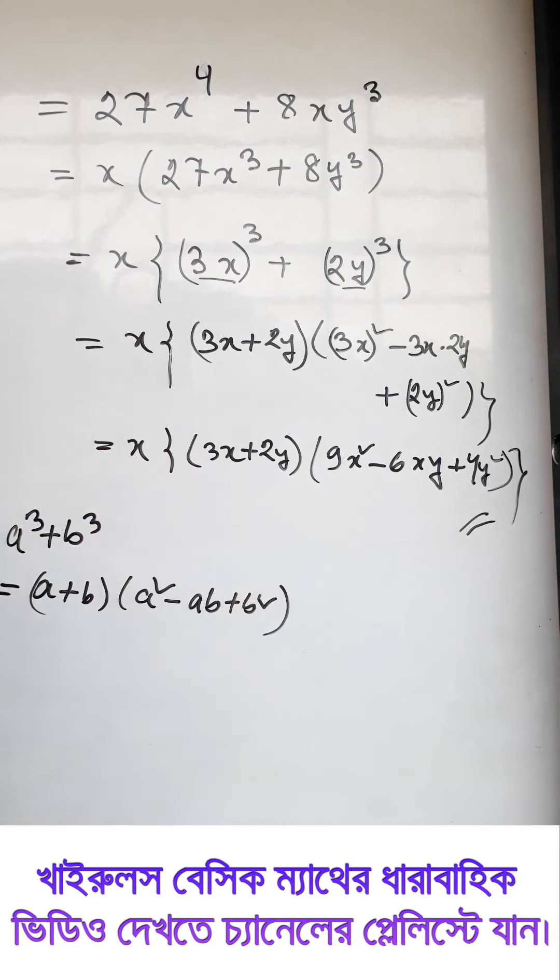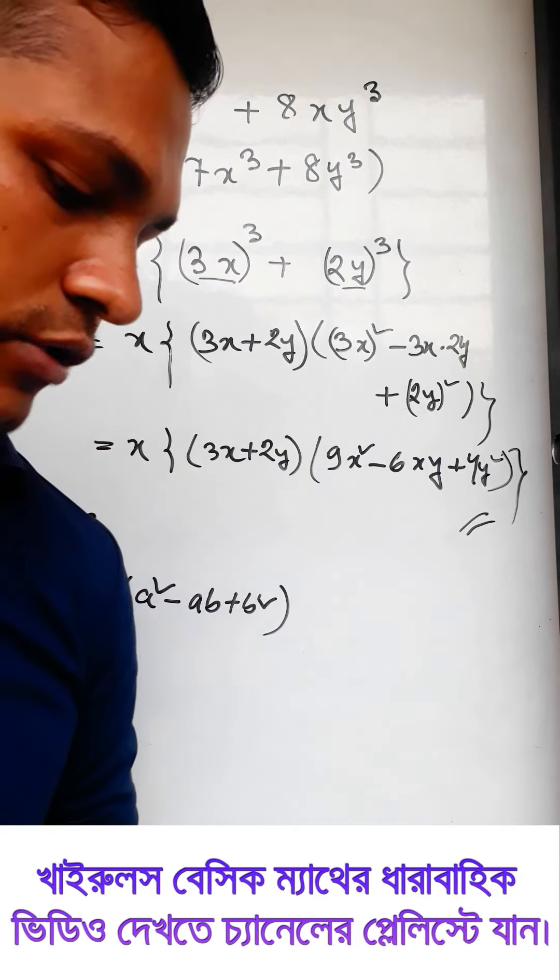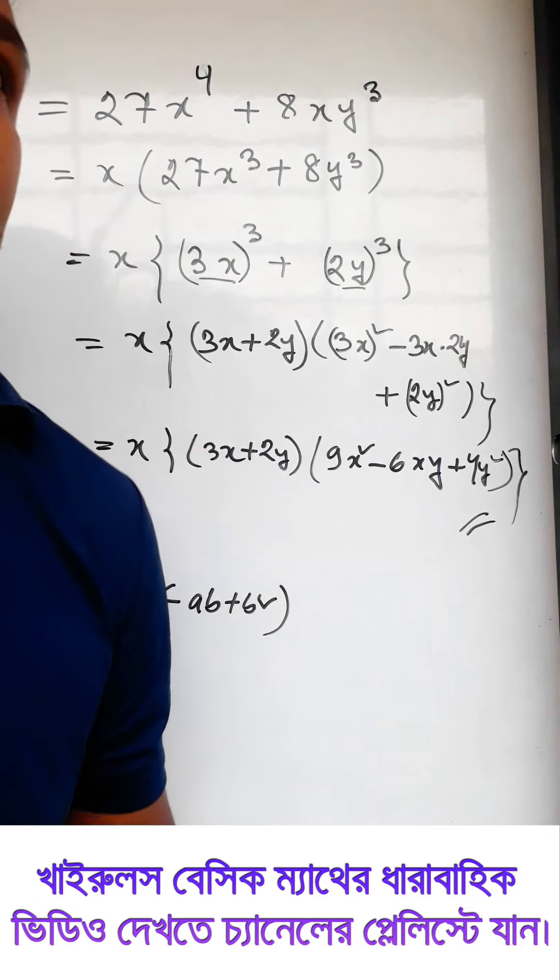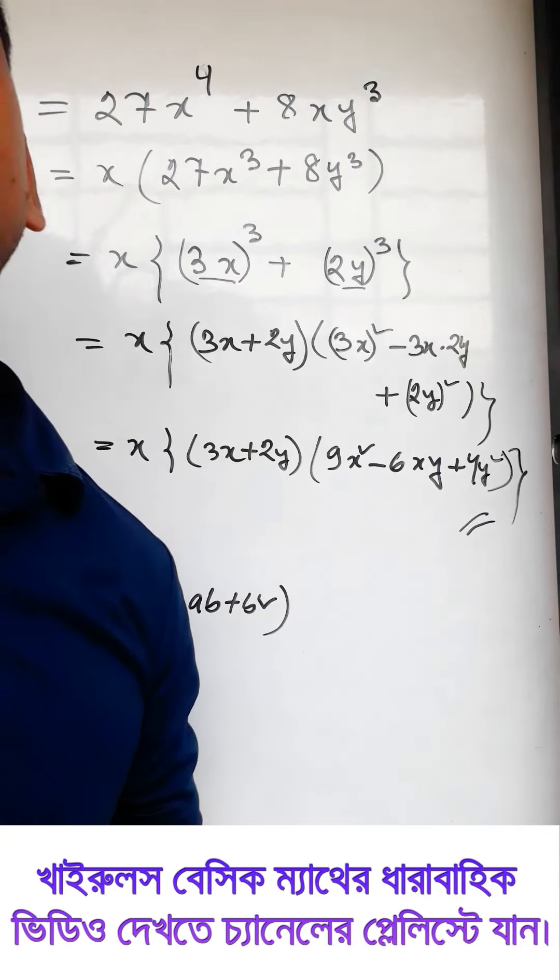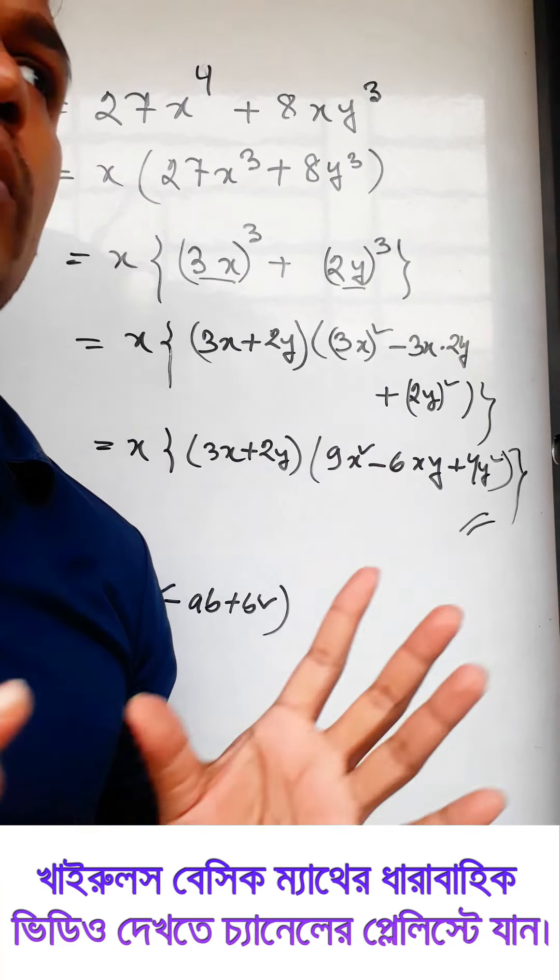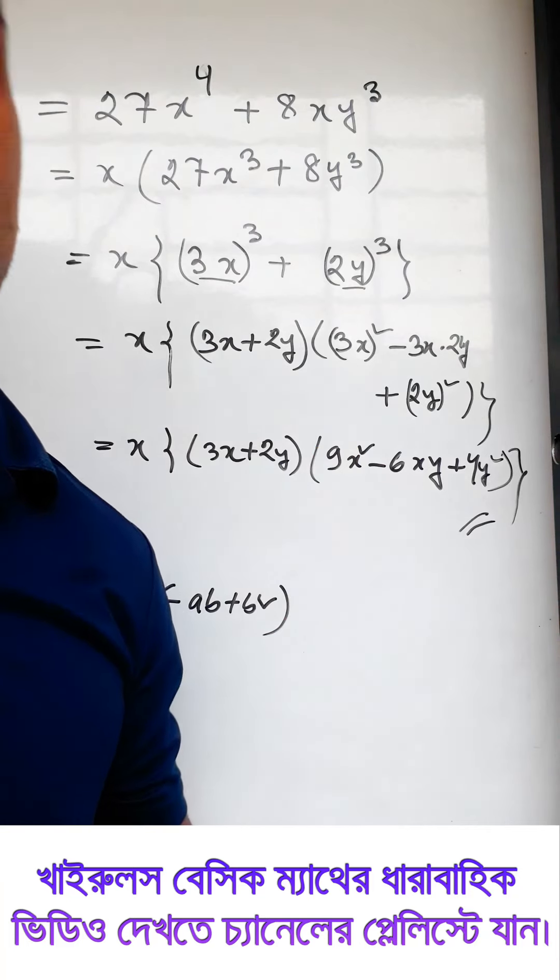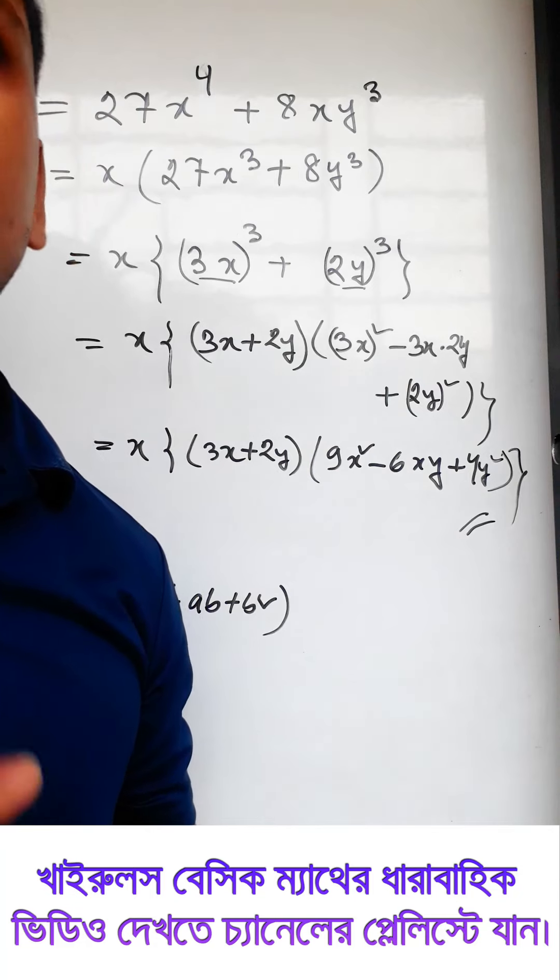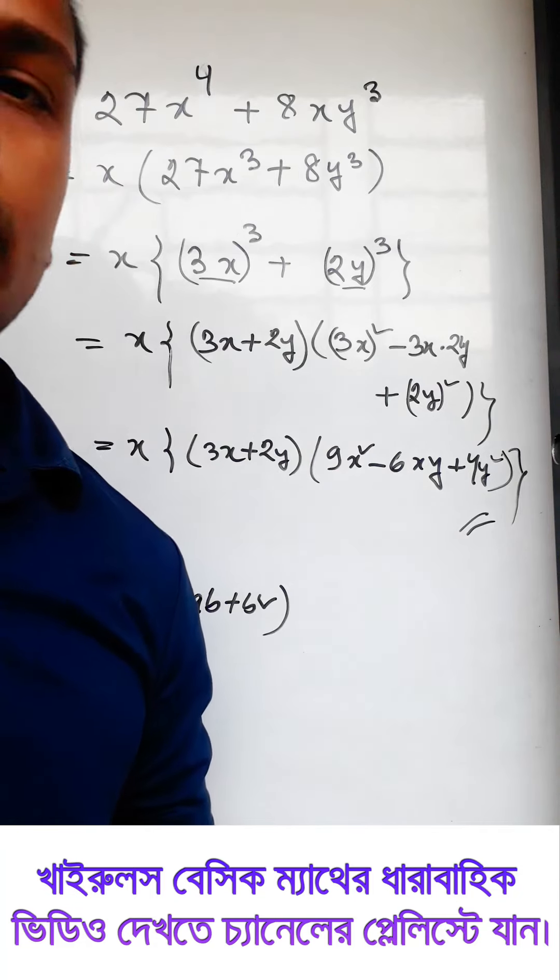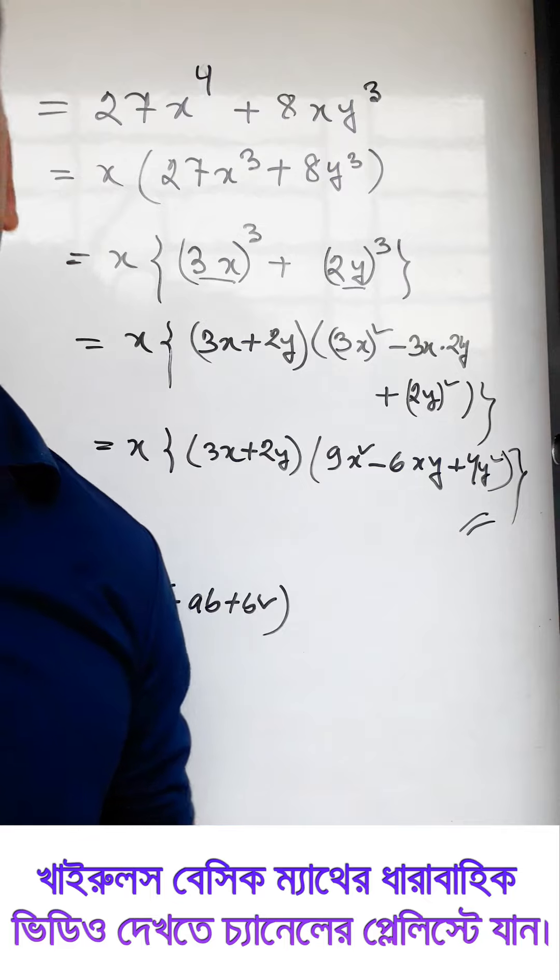So the complete factored form is x(3x + 2y)(9x^2 - 6xy + 4y^2). If you found this helpful, I upload basic math videos to my YouTube channel regularly. Please check out the other videos as well.